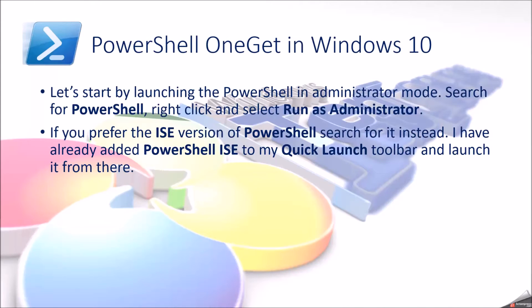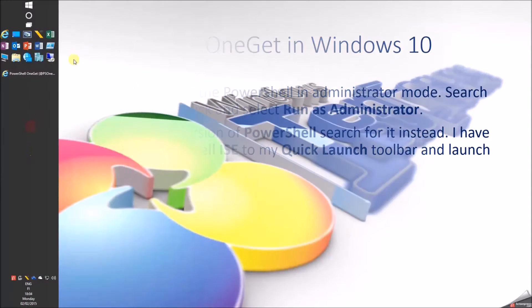Let's start by launching PowerShell in administrator mode. Search for PowerShell, right-click and select Run as administrator. If you prefer the ISE version of PowerShell, search for that instead. I have already added PowerShell ISE to my QuickLaunch toolbar and will launch it from there.